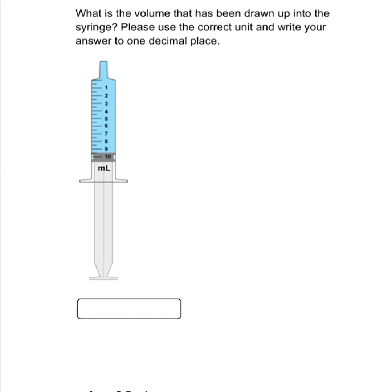Looking at the first question: it asks what is the volume that has been drawn up into the syringe — please use the correct unit and write your answer to one decimal place. You have to go by every instruction that comes along with the question, otherwise some of your answers will be wrong. Make sure to read all instructions attached to each question.